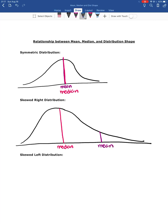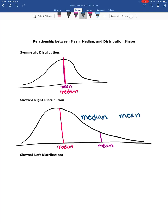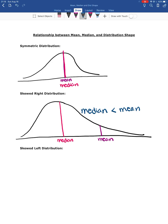When you have a skewed right distribution, the mean is larger than the median. The median is less than the mean. Remember the alligator symbol — the opening faces the bigger number. So with a skewed right distribution, the mean is bigger than the median.